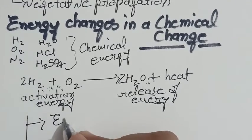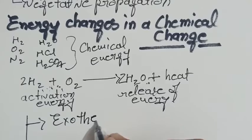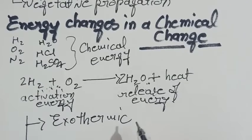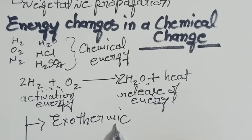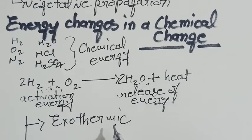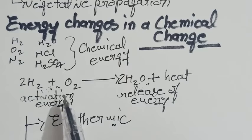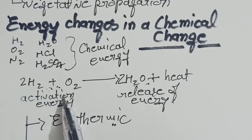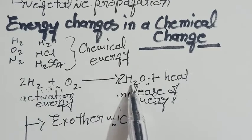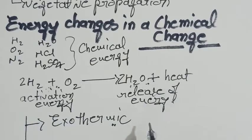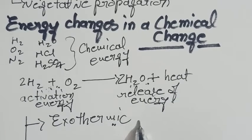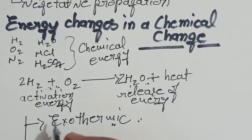Exothermic means a chemical reaction which proceeds with the evolution of heat energy. In such a case, the total energy of the reactants is always more than the total energy of the products. So some sort of energy is released out in an exothermic reaction.